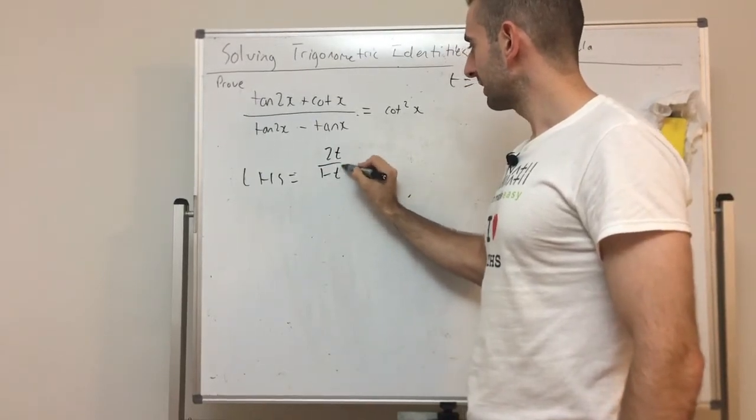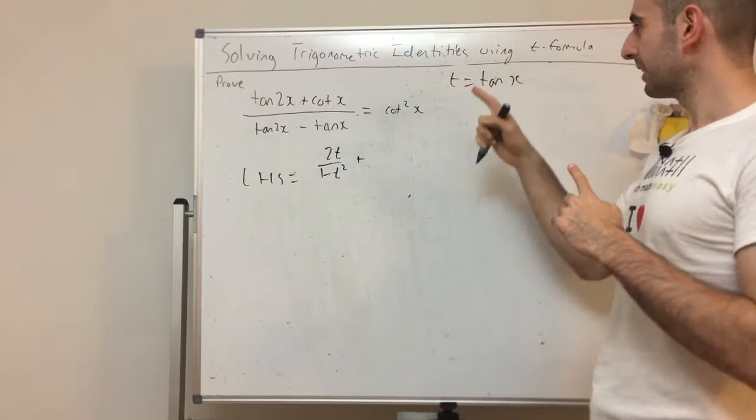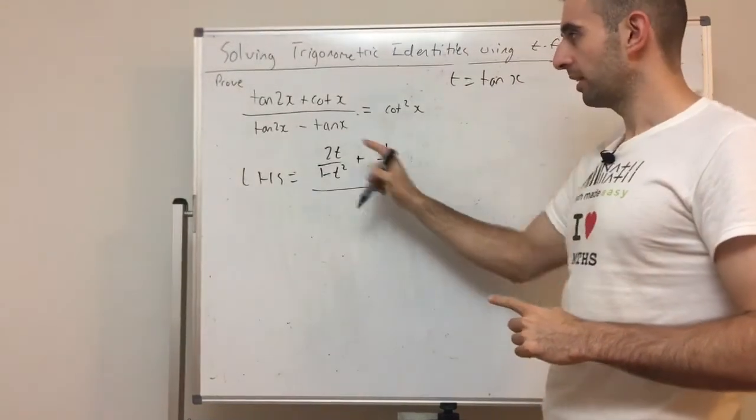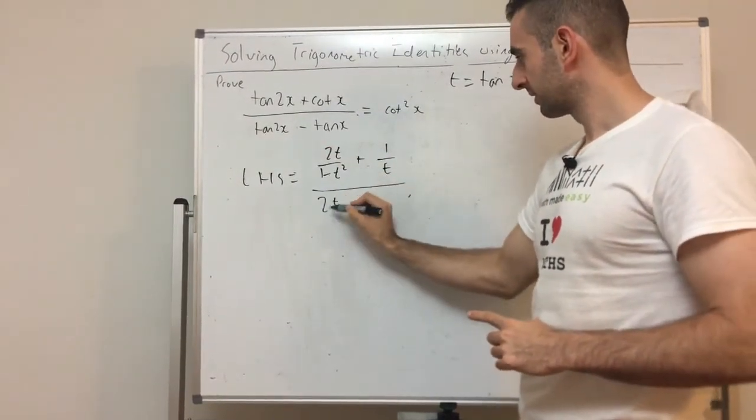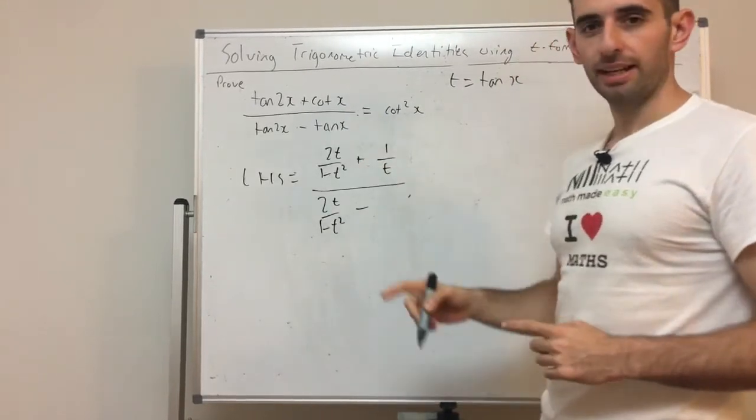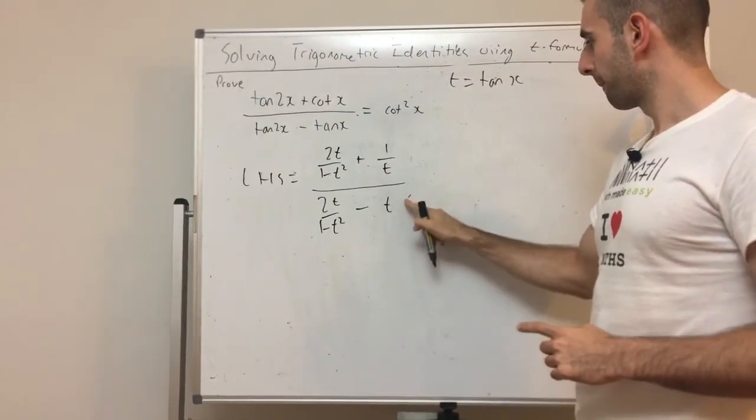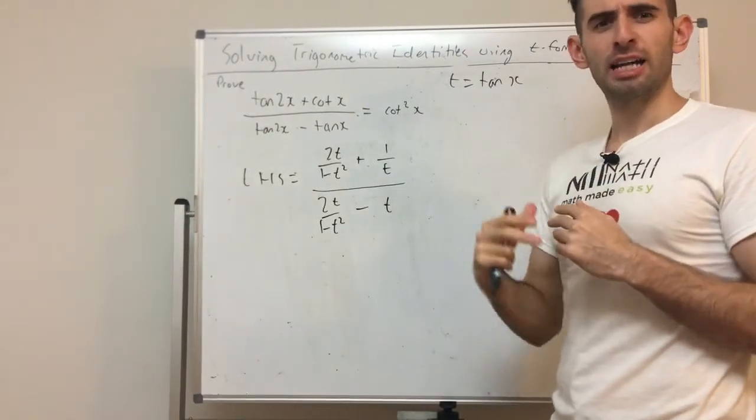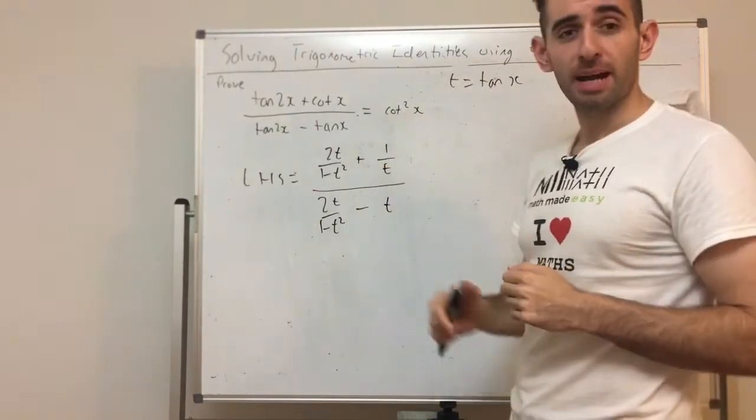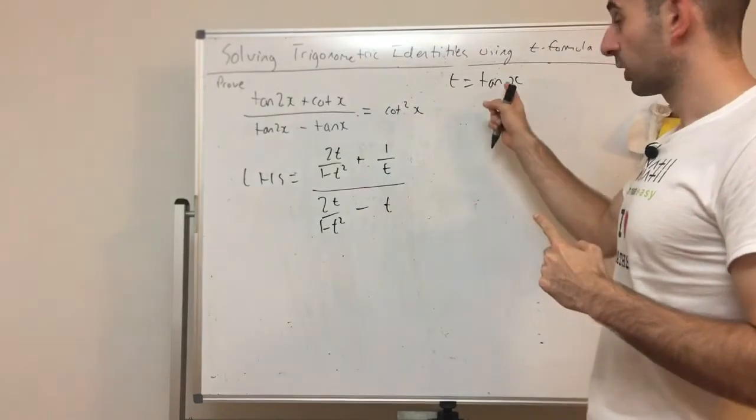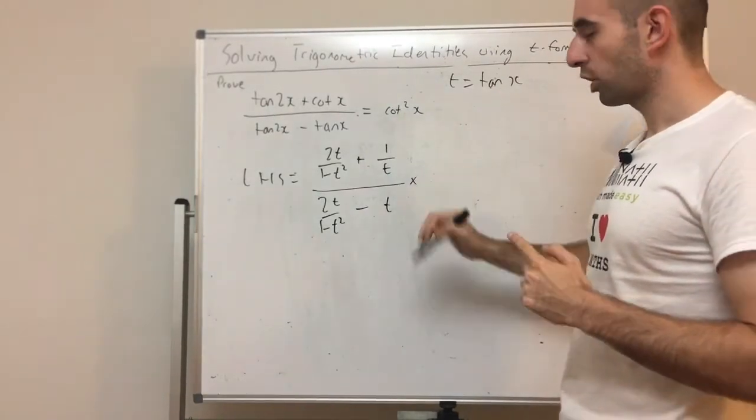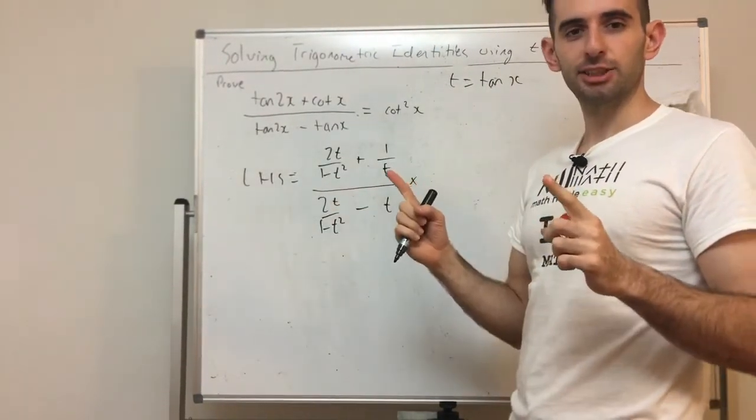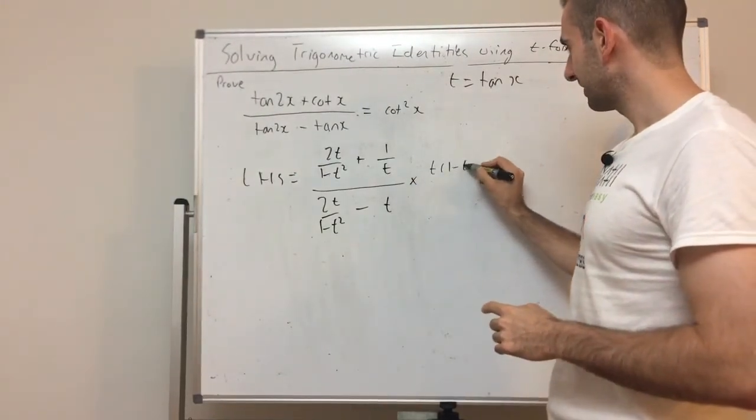2t over 1 minus T squared plus. Now cot x is 1 over tan x. Since tan x is T, that's just 1 over T over. Now what's tan 2x? It's the same as this. And minus tan x, which is just T. So remember, the trick with T formula is you only have to ever use as highest power as 2, right, quadratics. You should never have powers before, only 2s. That means you're using the wrong T substitution. So now we're going to do the same trick by timesing top and bottom by the LCD. So if we look at all the bottoms, we have T and 1 minus T squared. So your LCD is just their product, that's T brackets, 1 minus T squared.